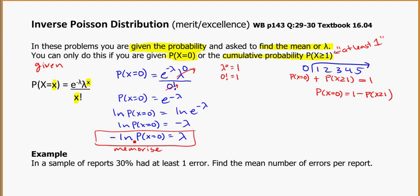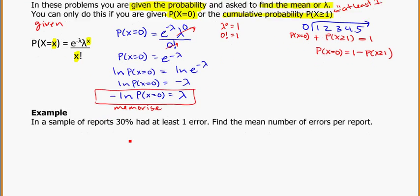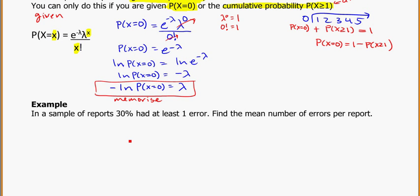And ln is just a button on your calculator. It literally says ln on it, so you'll be able to see it there. So that's the derivation of how we actually end up using this formula. And that's the one you'd want to memorize if you are going to memorize anything. And let's take a look at how this actually works in an example.